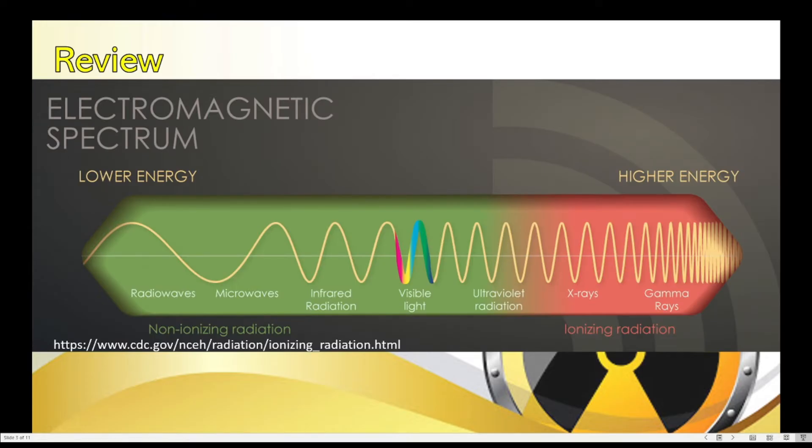So let's review the electromagnetic spectrum. We have shown this in the previous video for the non-ionizing radiation. This time, we will be discussing the remaining four EM waves which are visible light, ultraviolet, X-rays, and gamma rays.